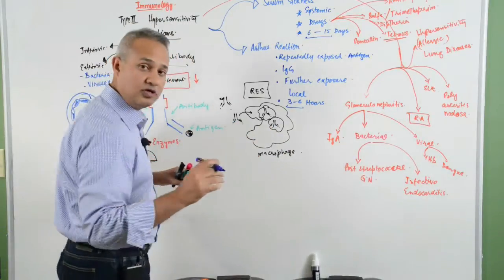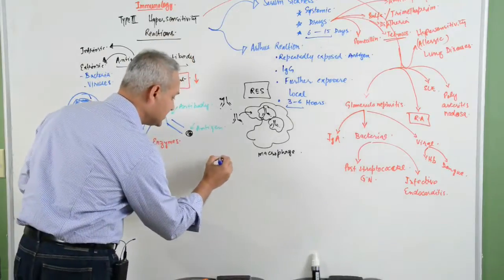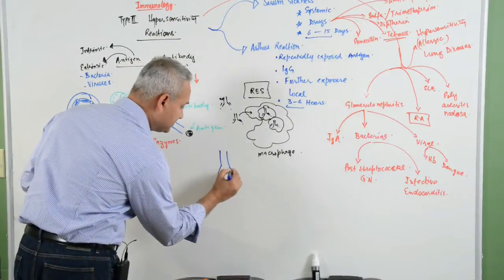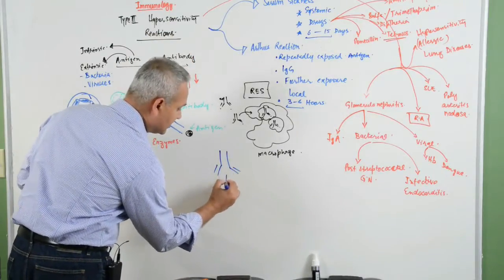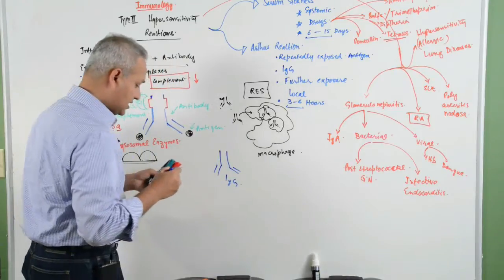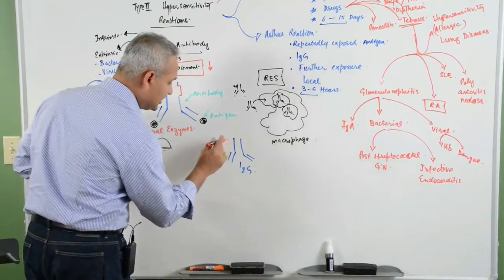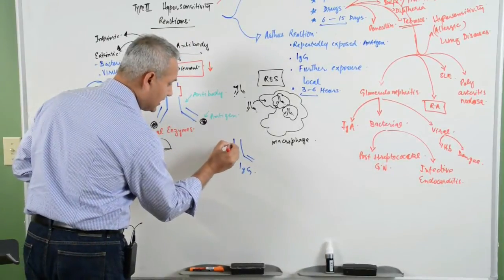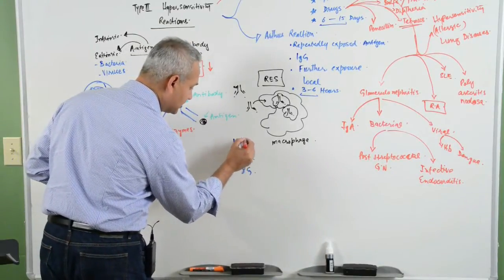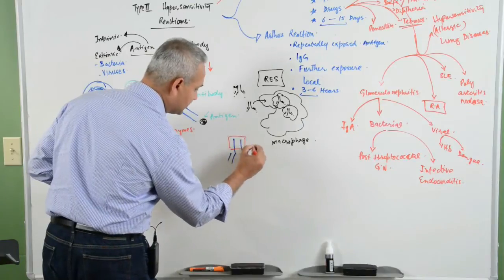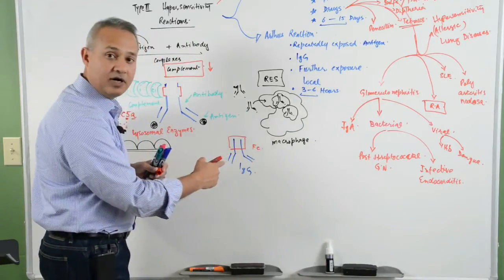What happens in rheumatoid arthritis is that, let's say this is our IgG. These women produce IgG and IgM against the Fc part of the IgG.